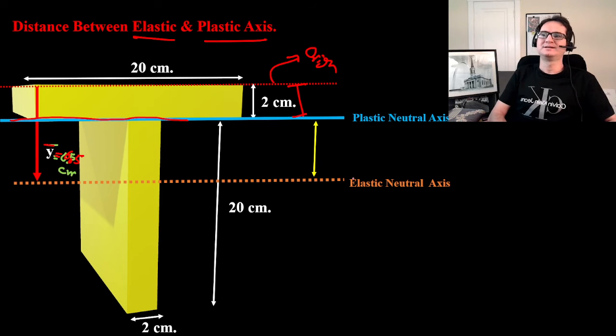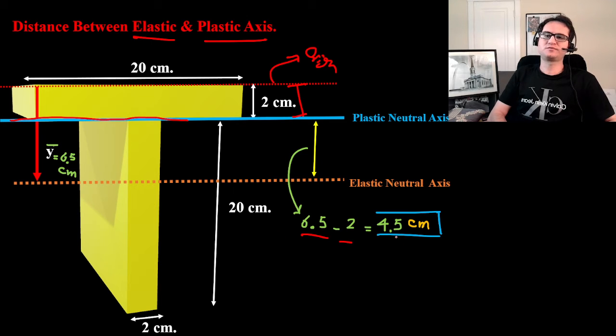So 6.5 minus 2 is 4.5 centimeters, which is the distance between the two neutral axes, elastic and plastic.